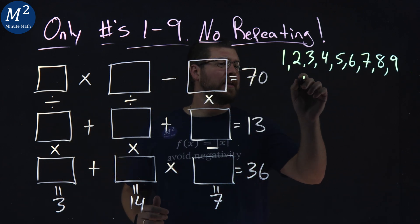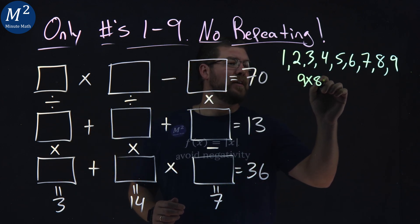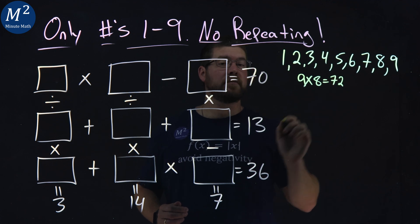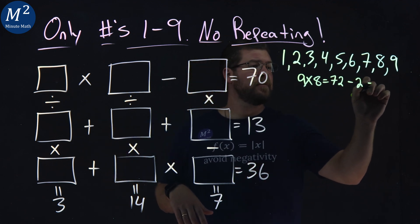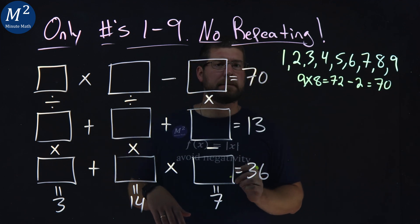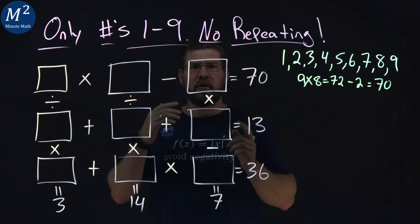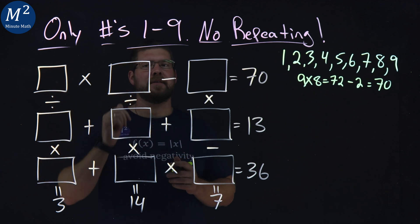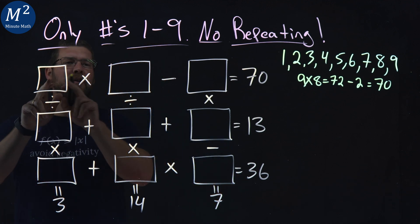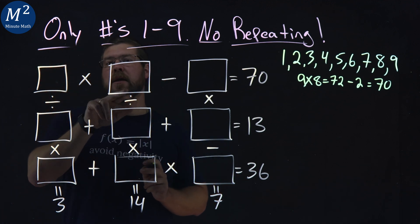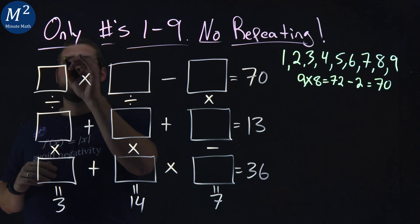I know a nine times an eight is equal to that 72, right, and then a minus a two, and I get a 70. Okay, so that kind of works here with multiplication, subtraction, so pretty confident that these are nines and eights here, so I'm going to go with that, but I don't know which one, or it could be eight times nine, or nine times eight.